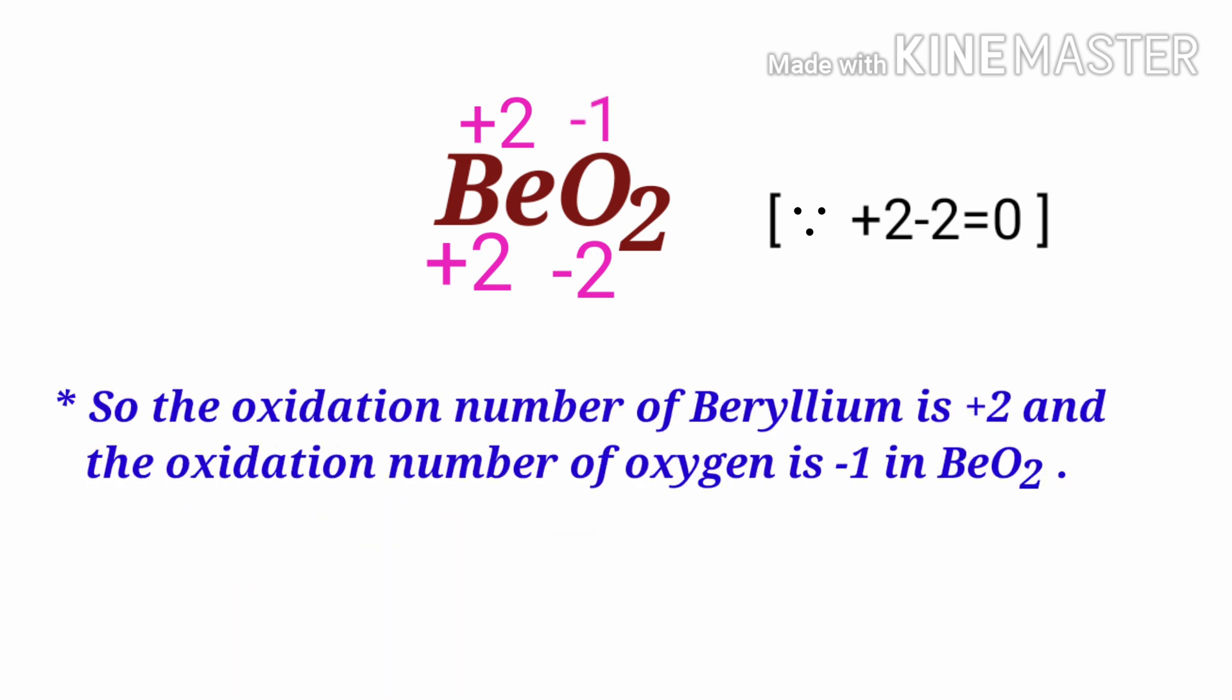So, the oxidation number of beryllium is +2 and the oxidation number of oxygen is -1 in beryllium peroxide.